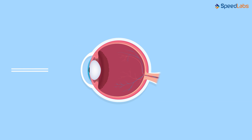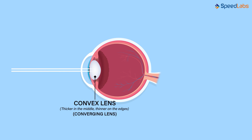The light that enters through the pupil falls on the lens kept behind. The lens is a convex lens — a lens which is thicker at the centre than the edges. It's a converging lens, meaning it focuses all the light at one point.